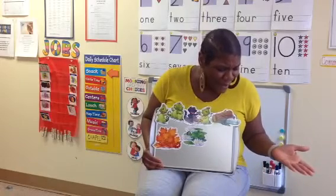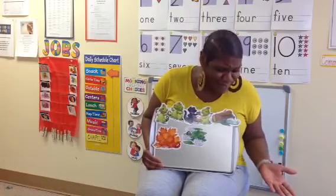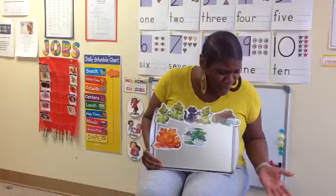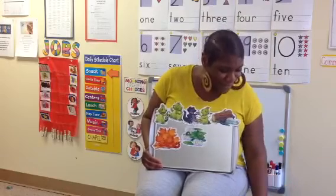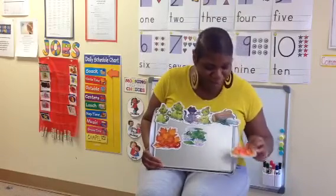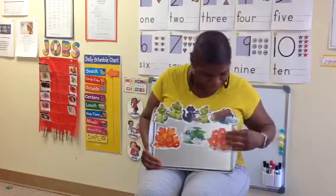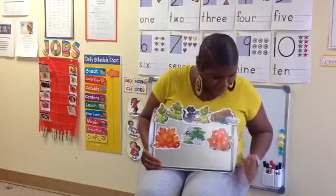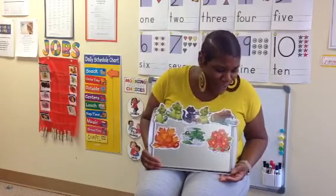Sammy walked right past her again. Wow, thought Kate, Sammy is not very good at this game. Kate moved again. This time she hid in a patch of red flowers.